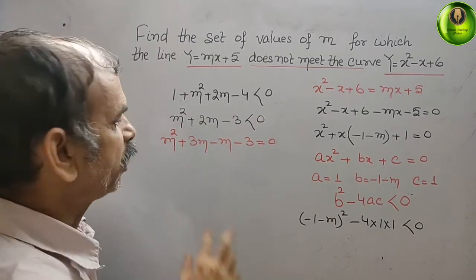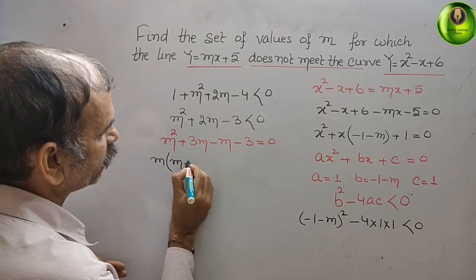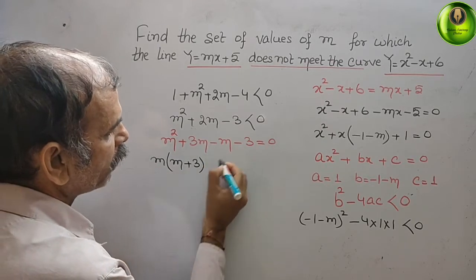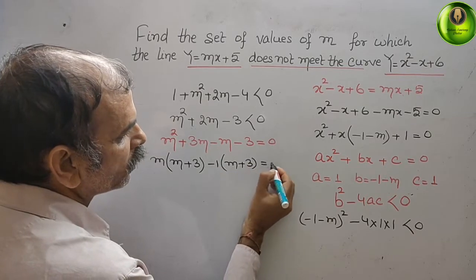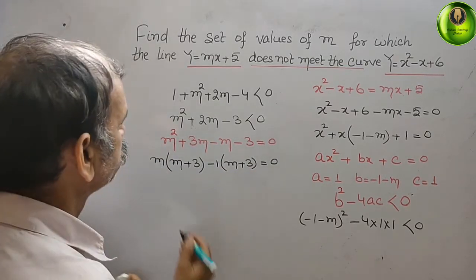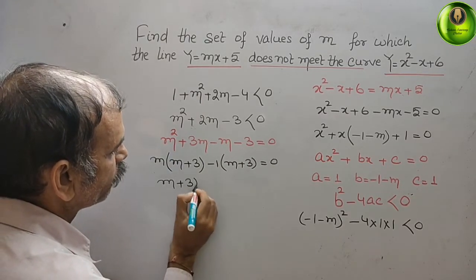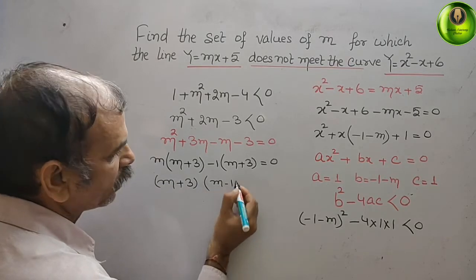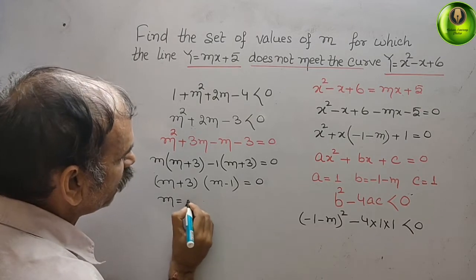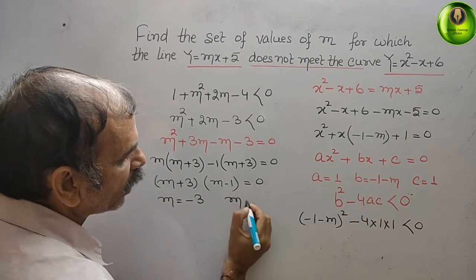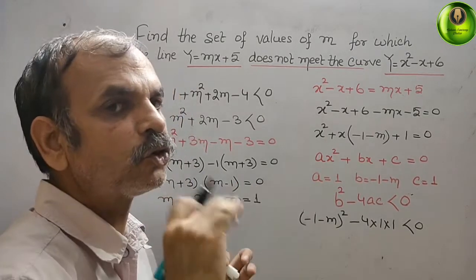Factoring: m is common in the first two terms, giving m(m + 3), and -1 is common in the last two terms, giving -1(m + 3). So we get (m + 3)(m - 1) = 0. Therefore m = -3 or m = 1. These are the two values of m.